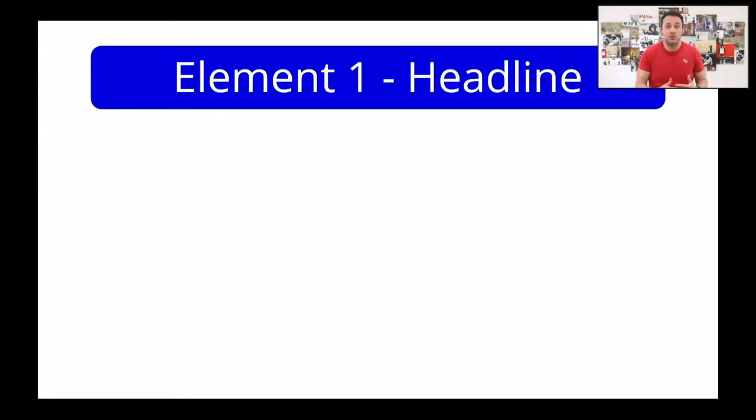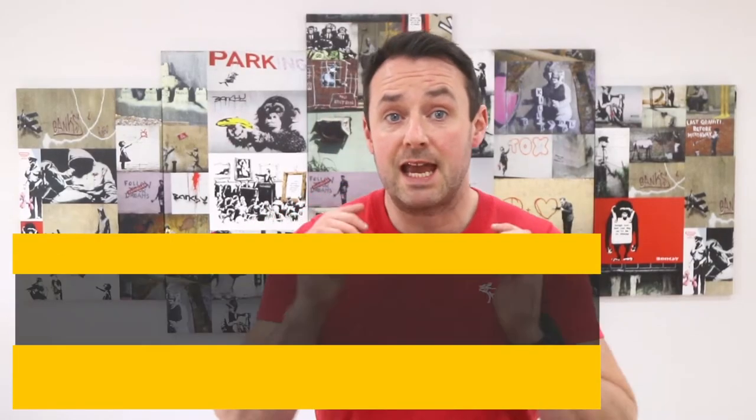Number four: describe a desired transformation. Don't tell them what you're going to give them — describe what will be possible for them once they have implemented what you're about to give them. Paint the possibilities. I didn't describe it as a 'beginner's guide to lead generation'; it was 'Get your first or next 1,000 email subscribers in 30 days.' I described what would be possible for them once they got their hands on my lead magnet. On the page layout, element one — the headline — should take up the majority of the space across the top of the page, because this is the first thing that your visitors' eyes are going to hit.